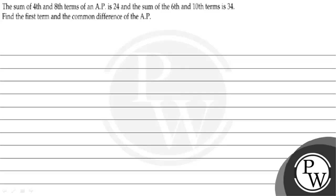Let's read the given question. The question states that the sum of the 4th and 8th term of an AP is 24, and the sum of the 6th and 10th term is 34. Find the first term and the common difference of the AP.